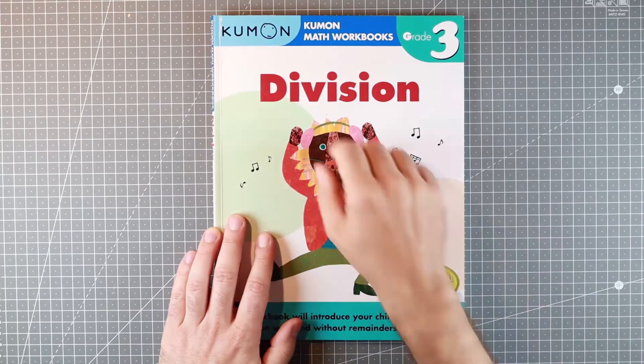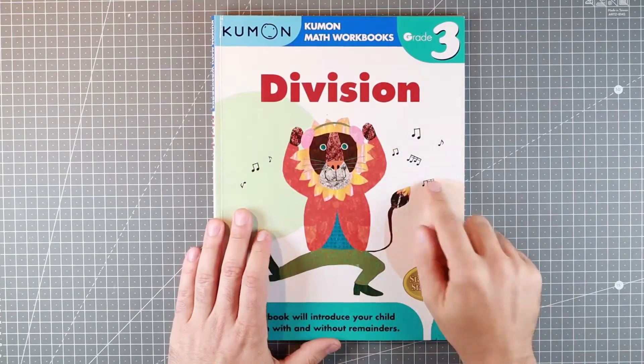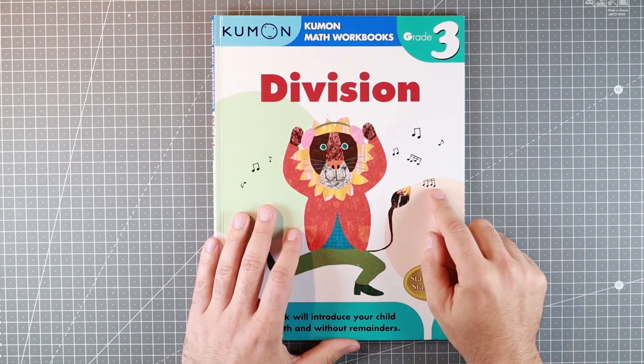From the land of rising sun, we have a strange-looking child, Kumon, Division Grade 3.